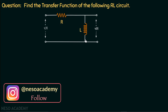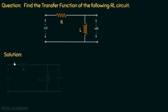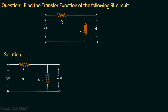In the previous problem the output voltage was measured across the resistor, but now in this problem we have changed the arrangement — the output voltage is measured across the inductor and we need to find the transfer function. Moving on to the solution, the first step is to find the Laplace equivalent circuit. The input voltage Vi(s) is given to the circuit.